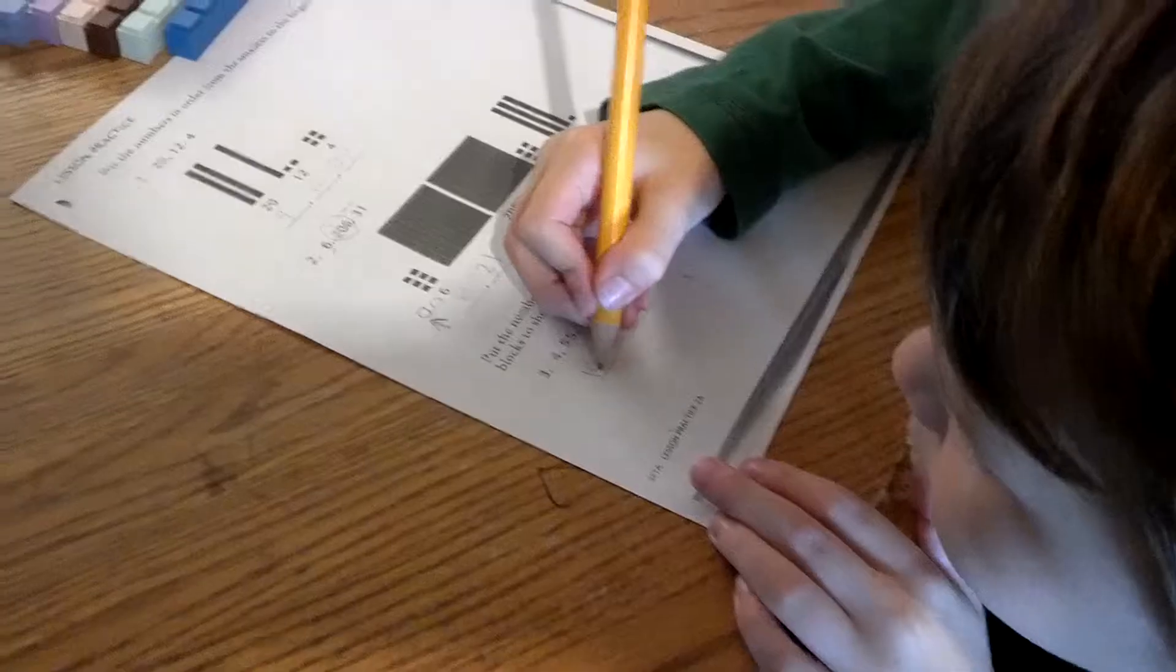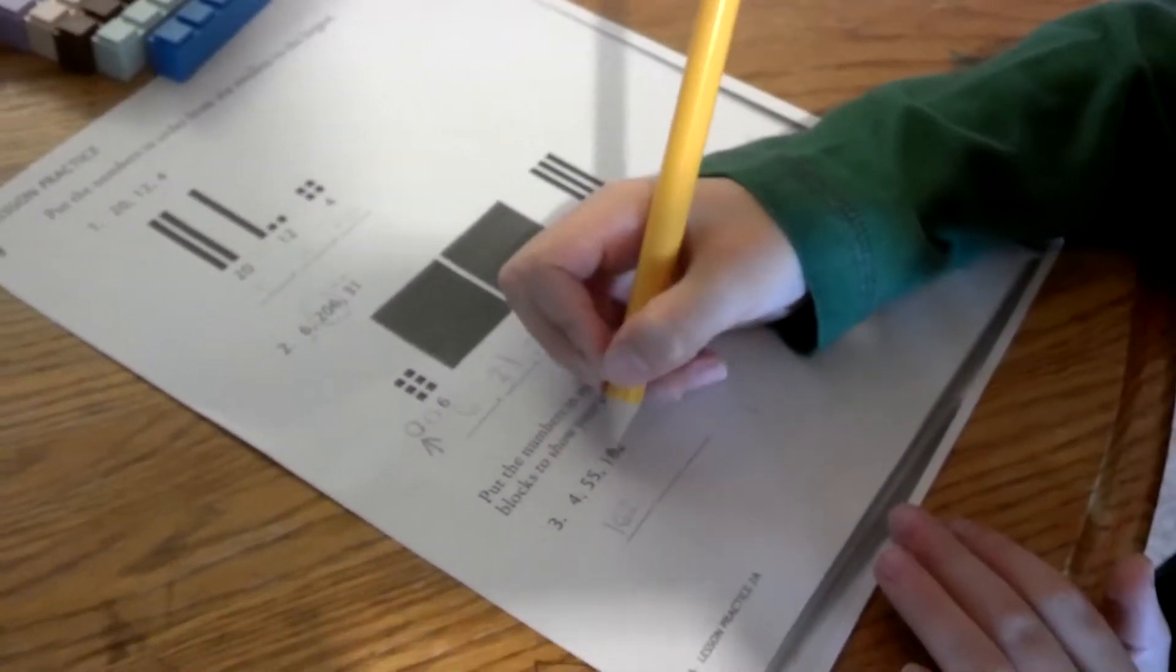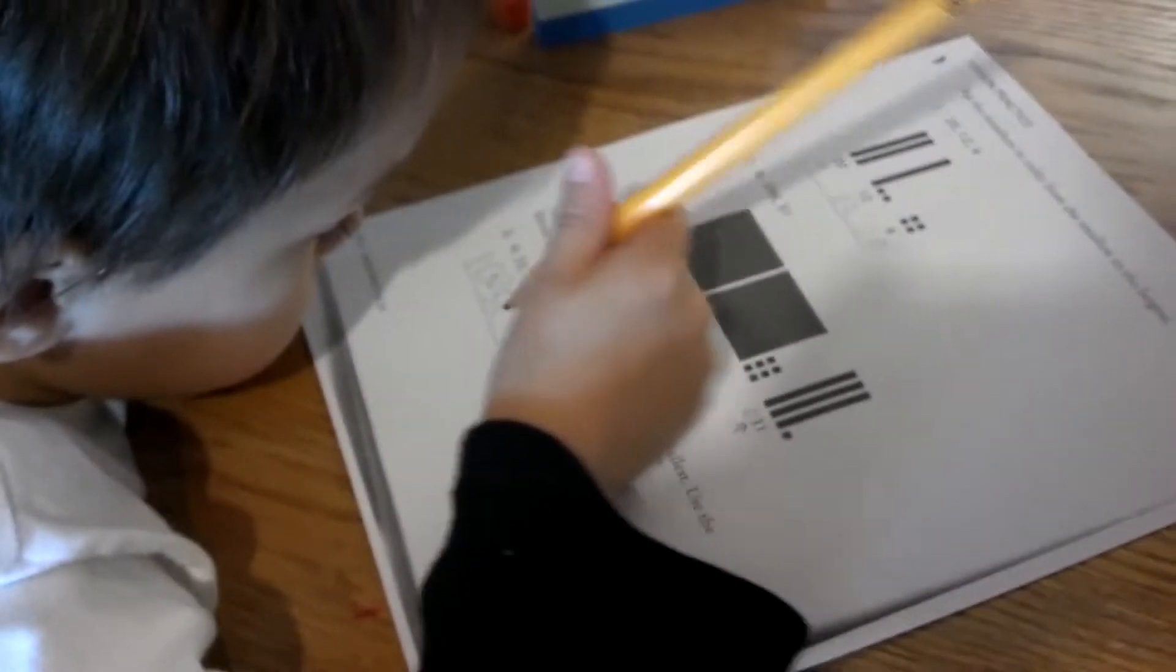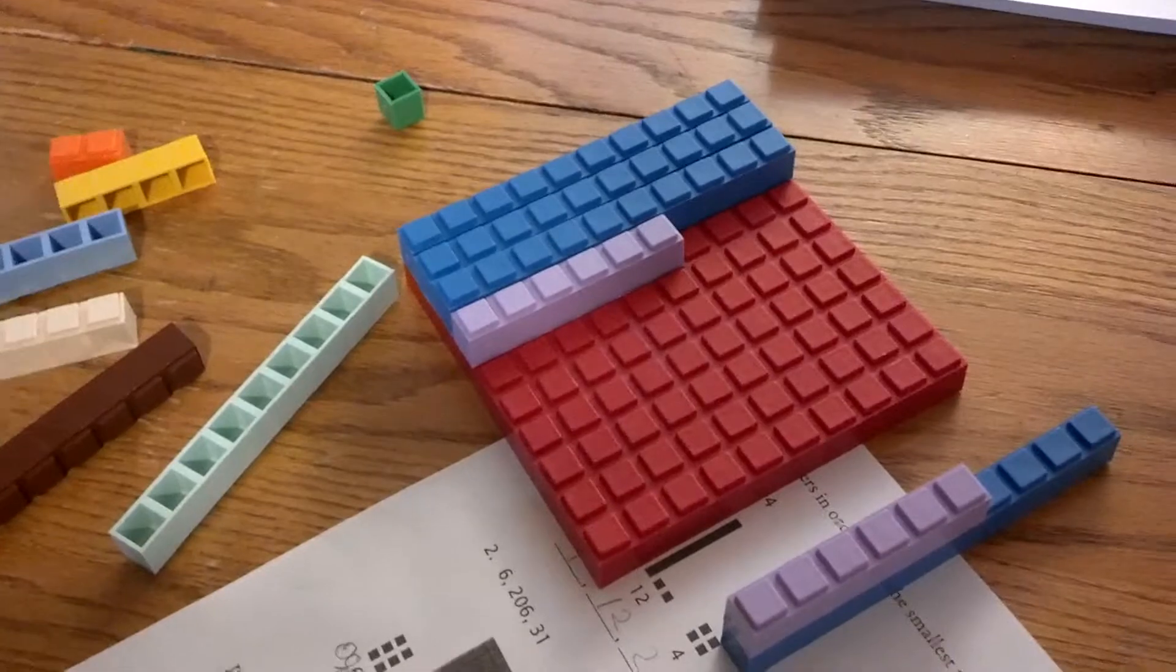Pretty good. How is it? I guess it's 55. Very good. So, Sammy, what number was the biggest number? 146.